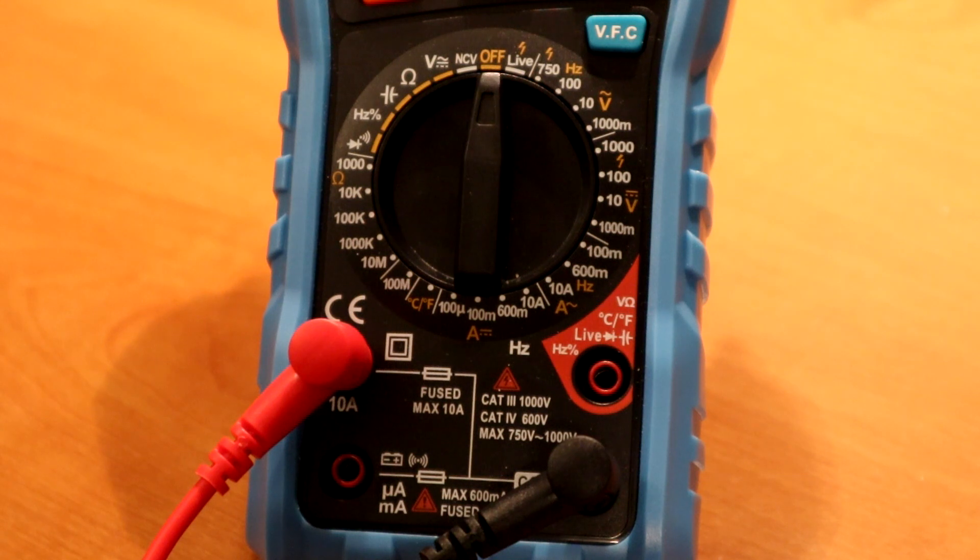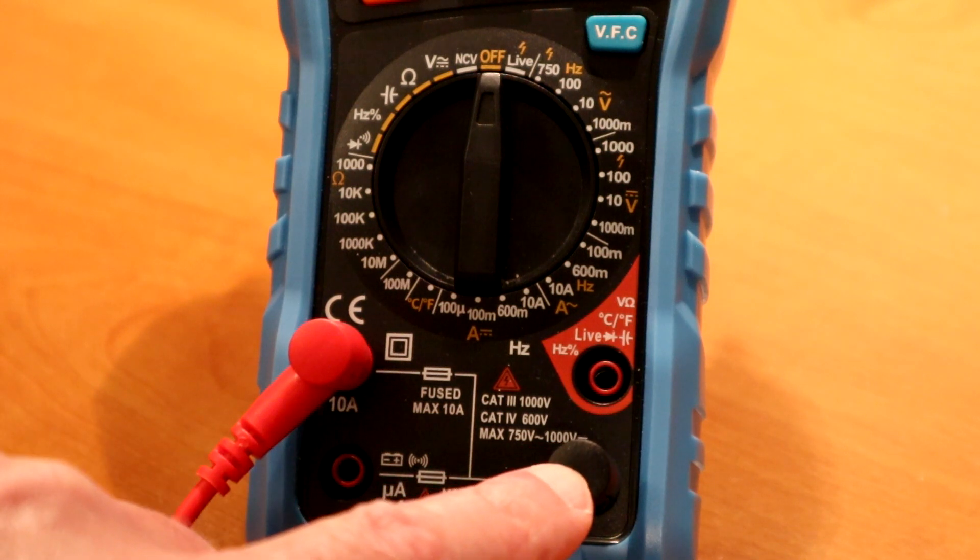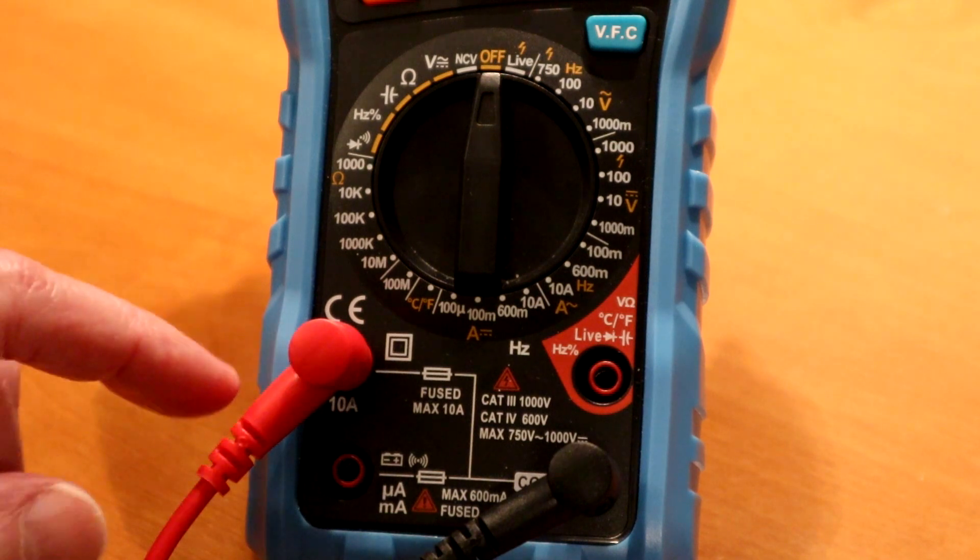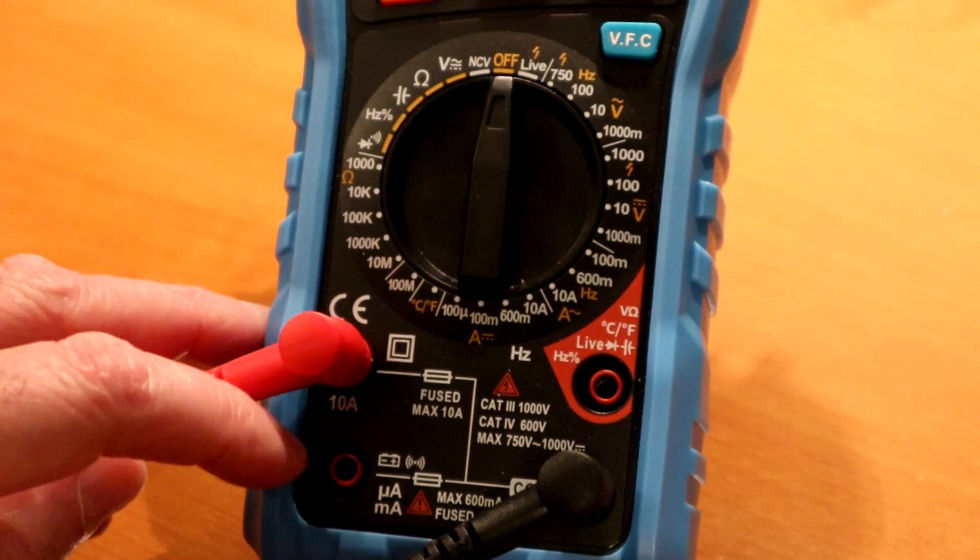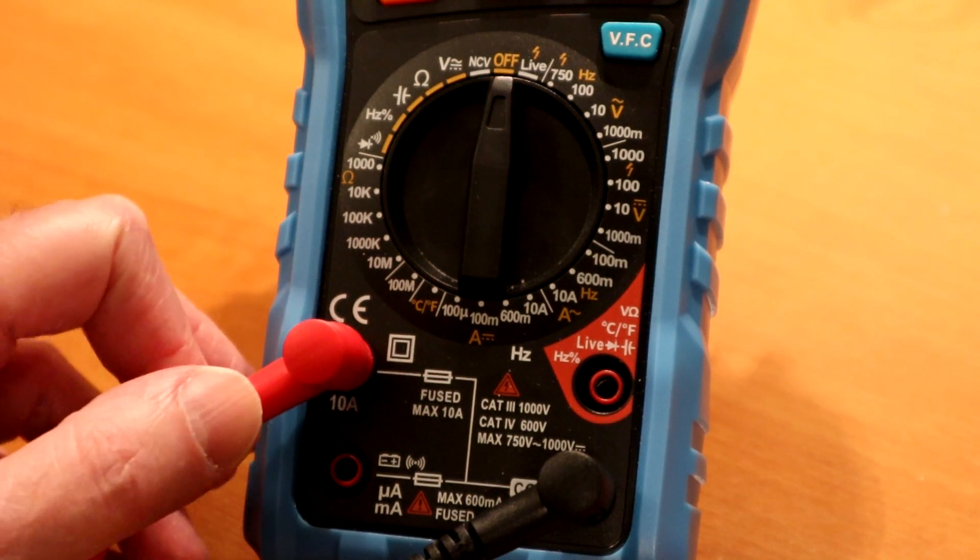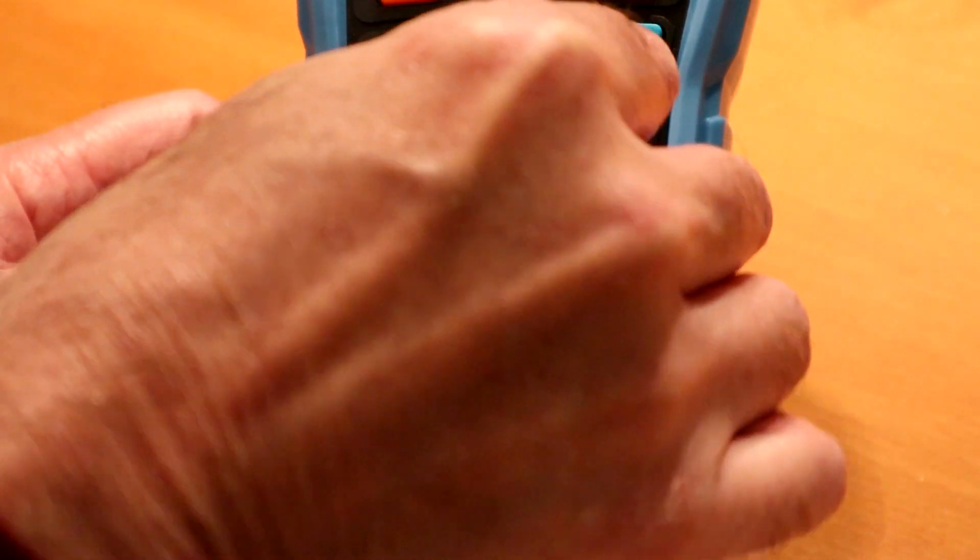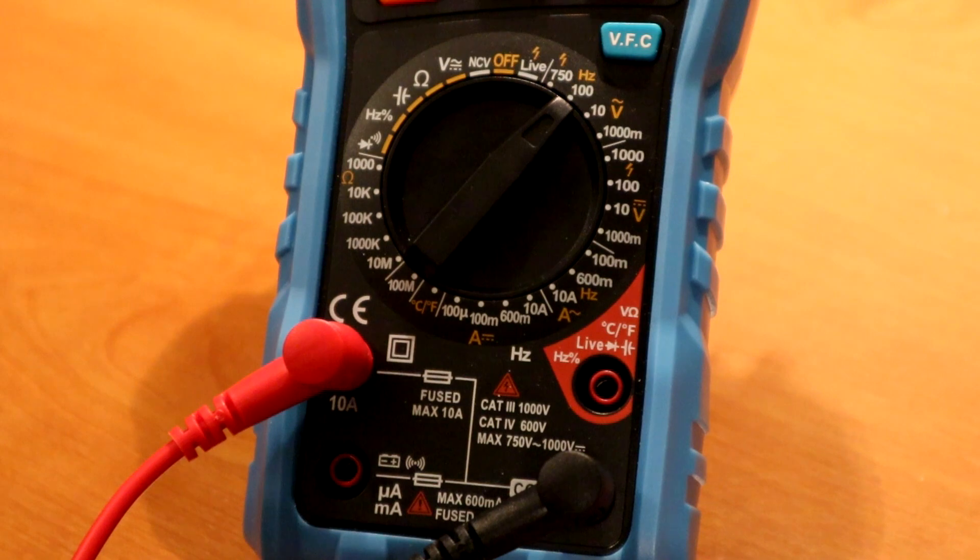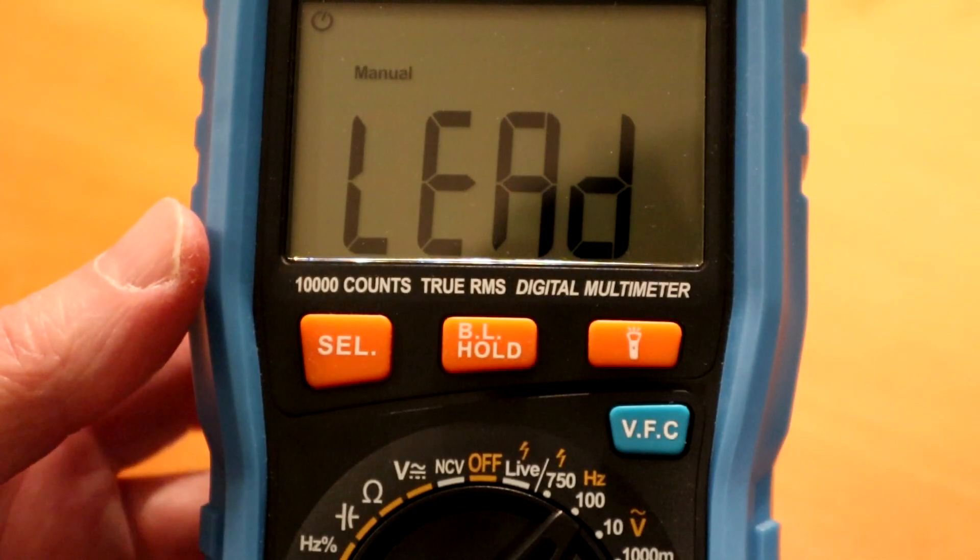So the last thing we'll look at here is using the current metering mode. I've got the probe common into the black over here, and I've got the red one into the 10 amp. I don't know if you can see that or not. The 10 amp inlet port there. And I'll turn this on. Oh, it's very upset.